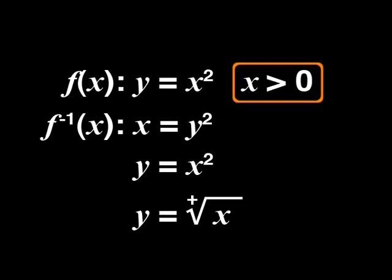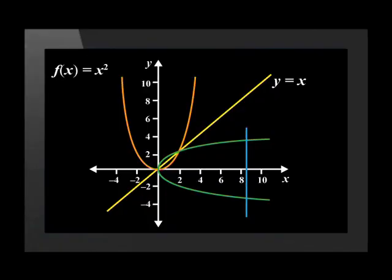But by restricting the domain of the original function, we can get an inverse function by reflection. In this way, we can get the equation of the inverse function too. Well done. That was a good introduction. Let's go over what we've just learned. The inverse of a quadratic function is not a function because there are two y values for every single x value. The vertical line cuts the graph twice at any given point.